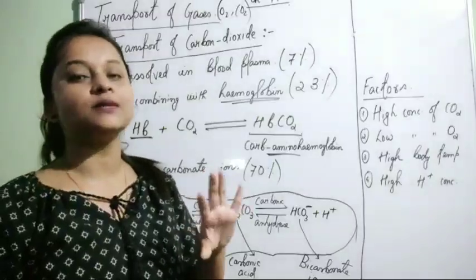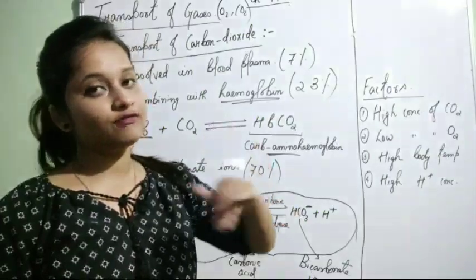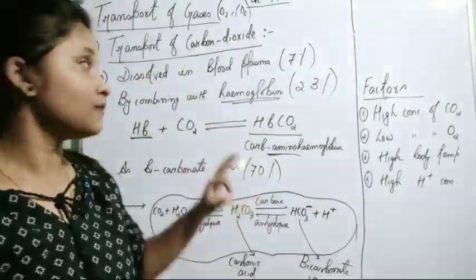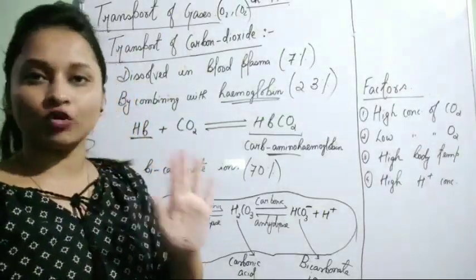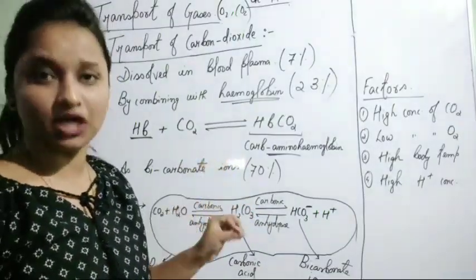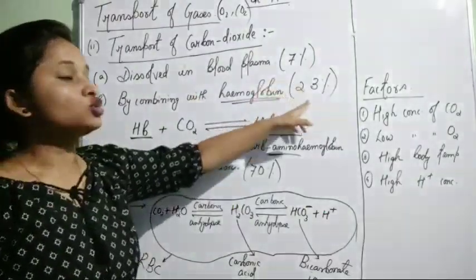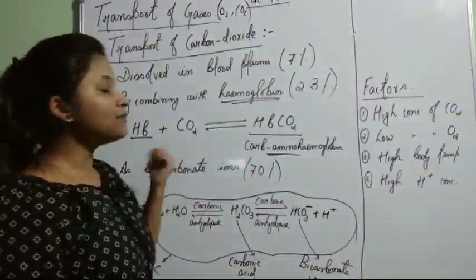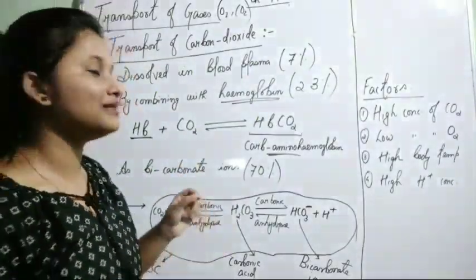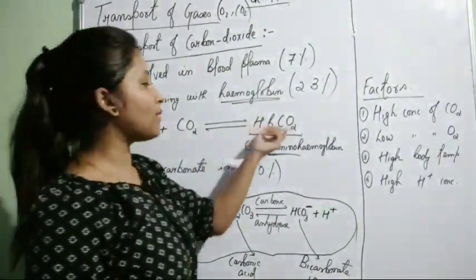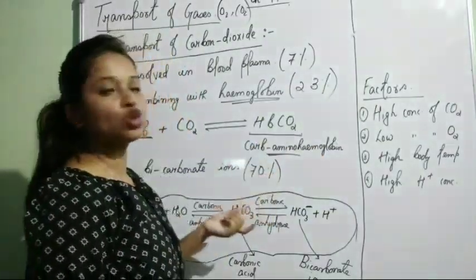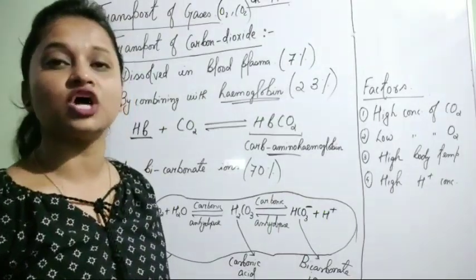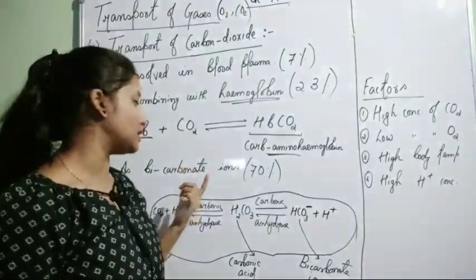When carbon dioxide is produced in our body tissue, it comes with blood and is transported to our alveoli, where we exhale it out. The three ways: 7% of total CO2 is transported by dissolving in blood plasma; about 23% is transported by combining with hemoglobin — forming carbaminohemoglobin (CO2 + Hb); and 70% of CO2 is transported as bicarbonate ions.